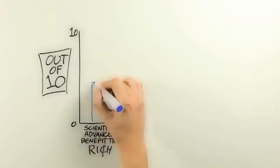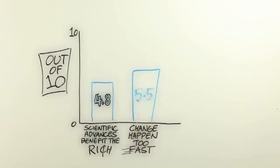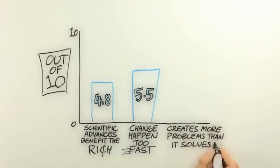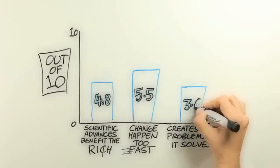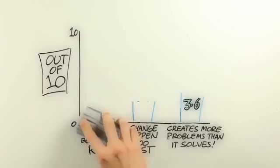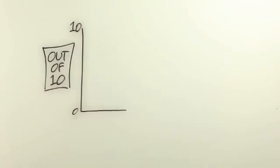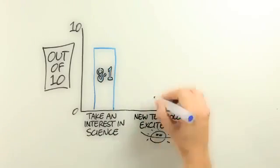When cross relating attitudes to GM food to values, we find that people who are most concerned about GM foods tend to agree with statements such as: scientific advances tend to benefit the rich more than they benefit the poor, technological change happens too fast to keep up with, we should use more natural ways of farming, and people shouldn't tamper with nature.